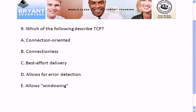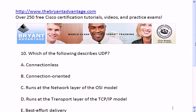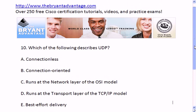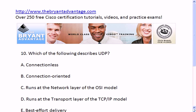Scrolling down to look at all the choices for questions nine and ten. TCP is connection-oriented, so that's A. It does allow for error detection, that's D. And it does allow windowing. For question ten, which of these describes UDP: it is connectionless, so that's A. It does run at the transport layer of both the TCP/IP model and the OSI model. It does have best-effort delivery, and it does indeed deliver segments — we're always working with segments, whether we're working with TCP or UDP.